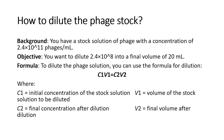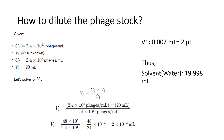To dilute the phages, I will use the formula C1V1 = C2V2. Here, C1 is the initial concentration, V1 is the volume of stock to be calculated, C2 is the desired final concentration of 2.4 × 10⁸, and V2 is the final volume of 20 ml. We need to find V1 — how much we will take from our stock solution to add into 20 ml so the concentration becomes 2.4 × 10⁸.